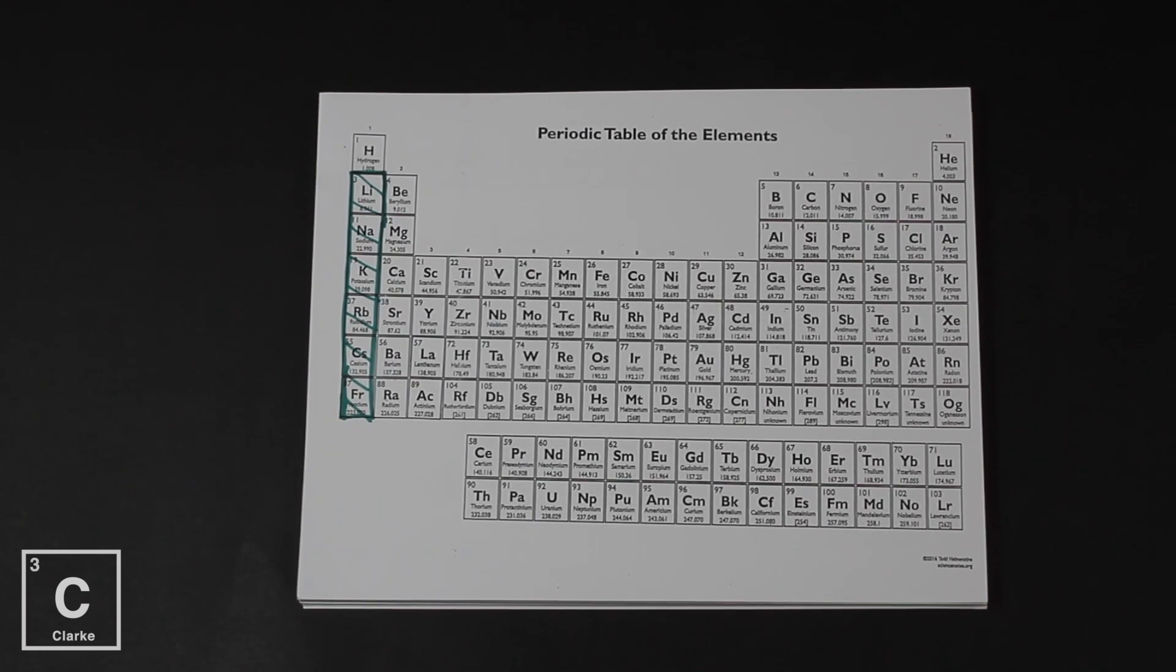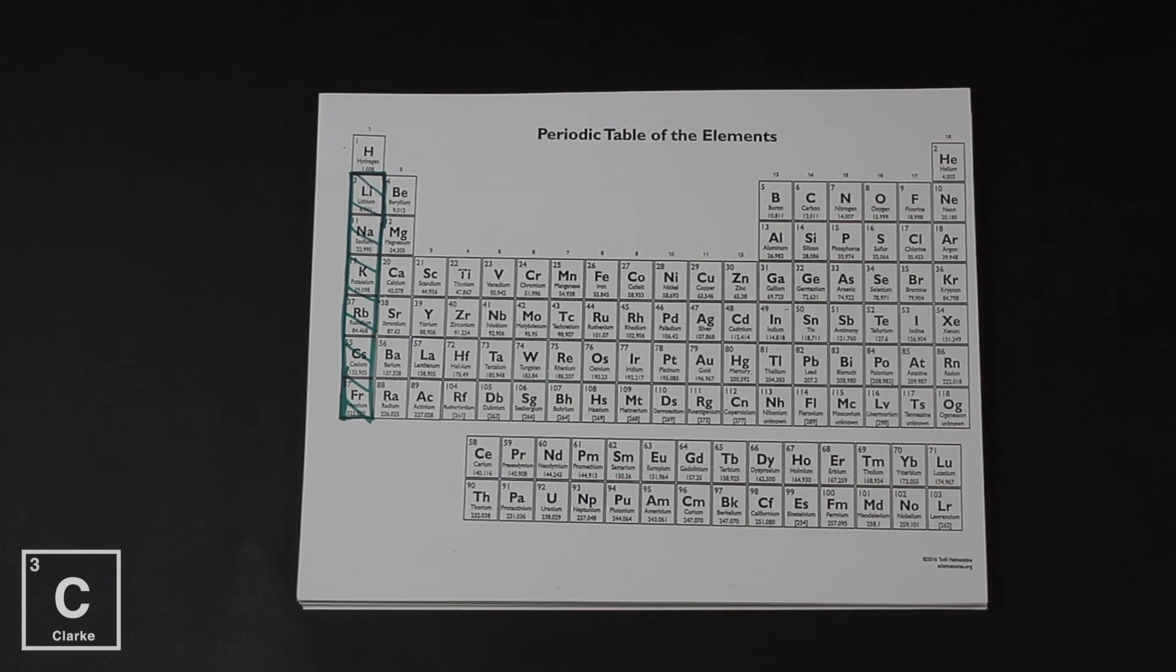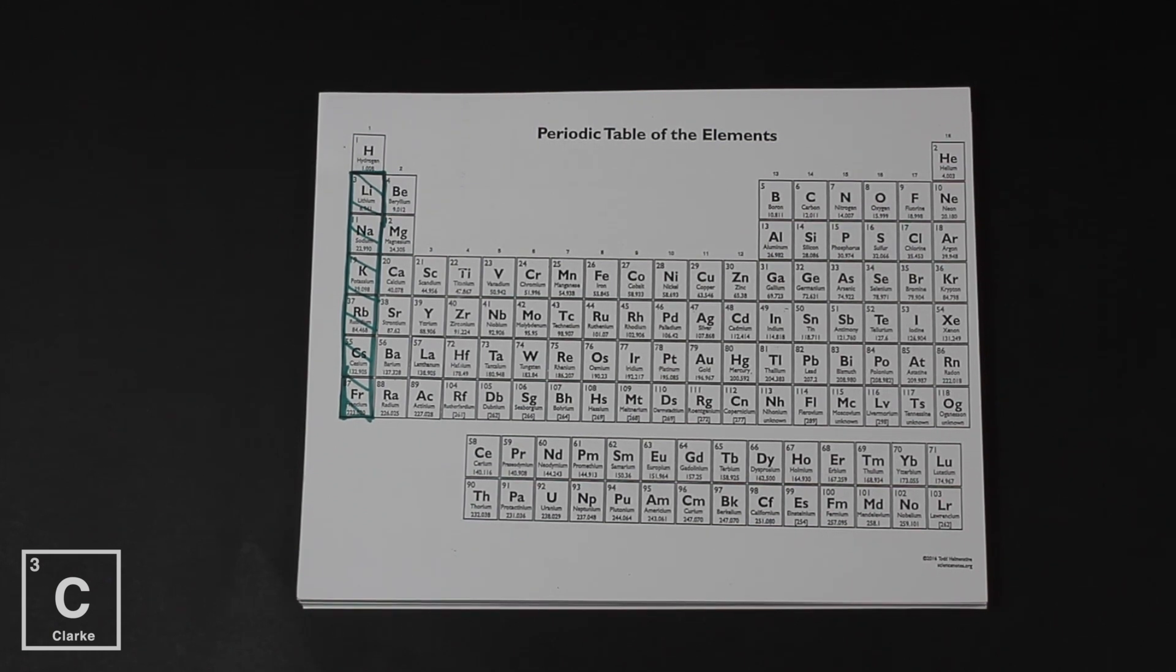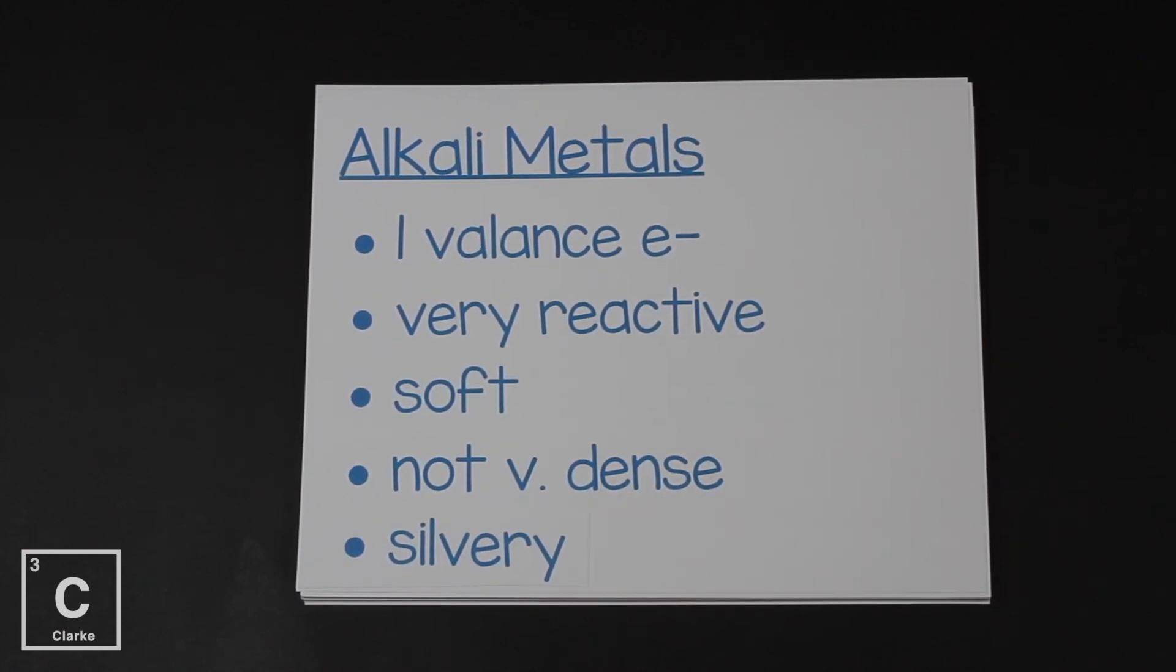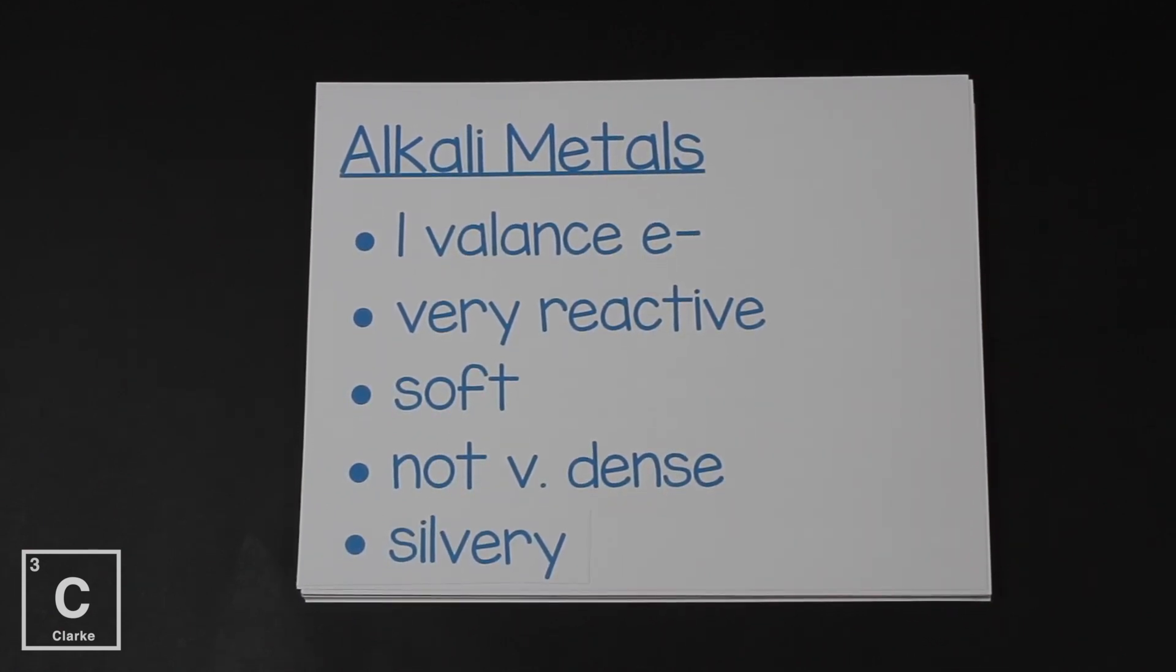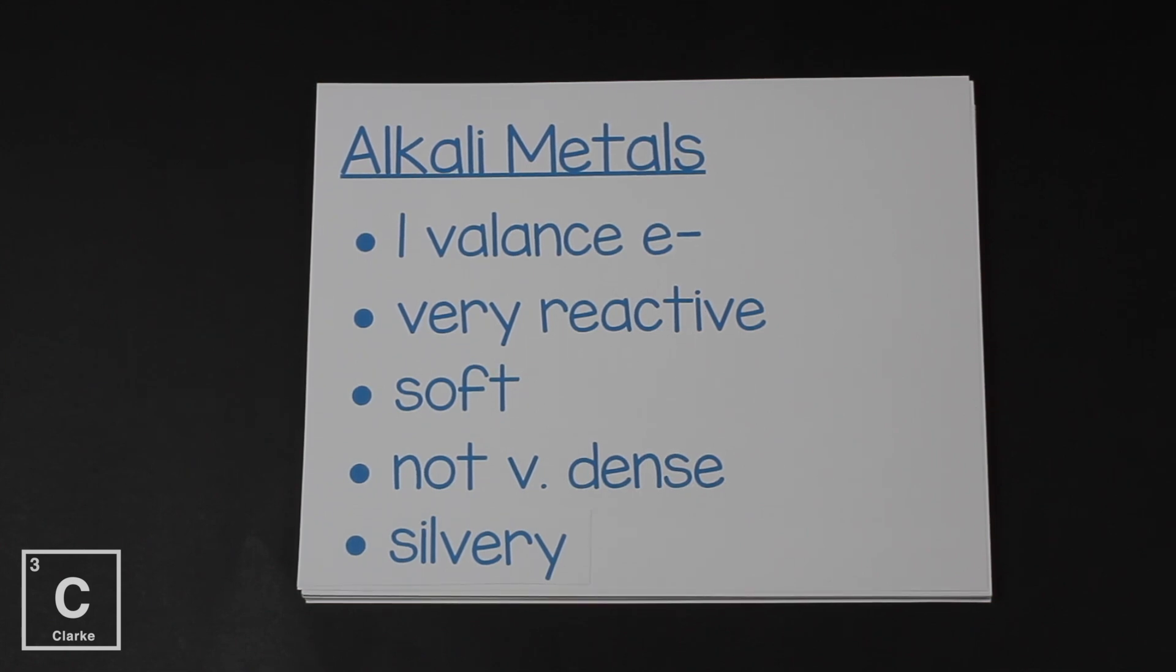The periodic table has several family groups that have special names. Group one is called the alkali metals. The alkali metals, since they're group one, have one valence electron and are very reactive. In fact, they're so reactive that if they touch water, they explode. They're soft - you can cut them with a butter knife. They're not very dense, and they're silvery.